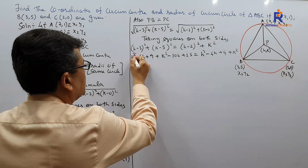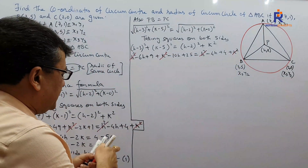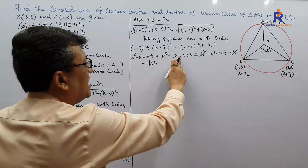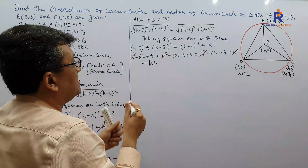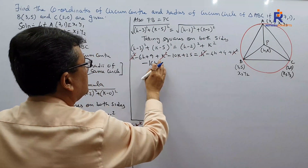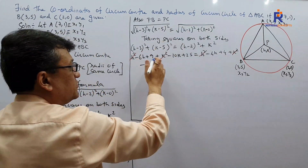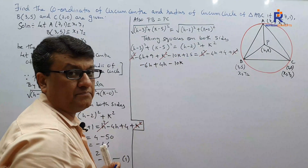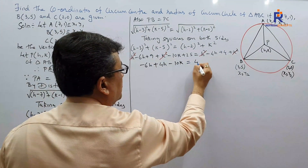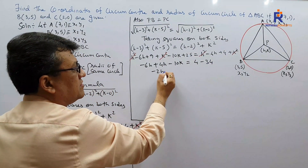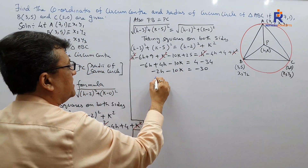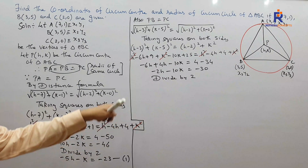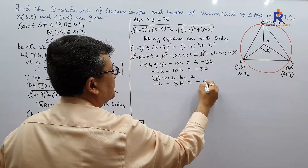Cancelling h² and k² from both sides, we are left with: −6h + 4h − 10k + 9 + 25 − 4 = 0. That gives −2h − 10k + 30 = 0, so −2h − 10k = −30. Dividing by 2: −h − 5k = −15. Let this be Equation 2.